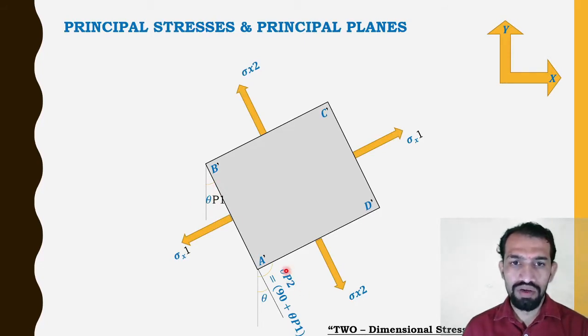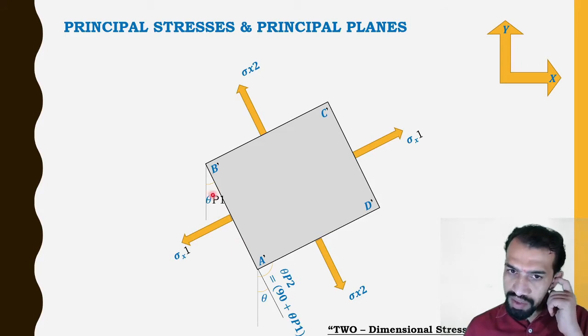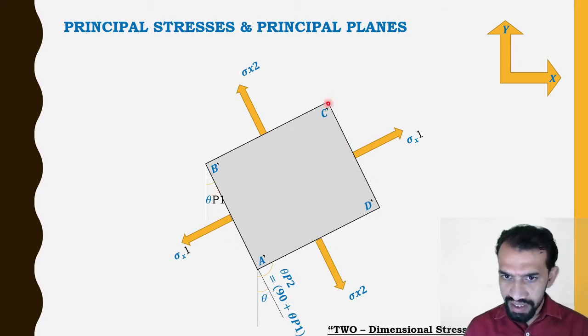So now we come to which is the principal plane. A-dash B-dash is one principal plane and C-dash D-dash is another principal plane. Sigma x1 is the maximum or minimum principal stress, and sigma x2 is another maximum or minimum principal stress. So the principal planes are A-dash B-dash and D-dash C-dash.